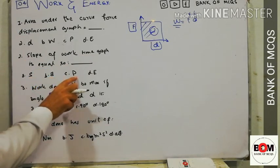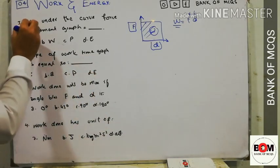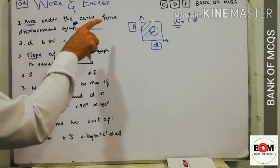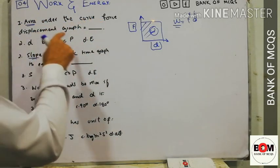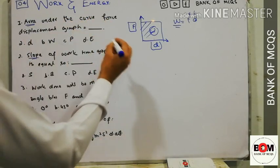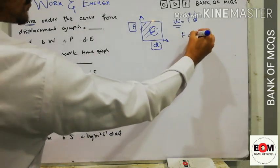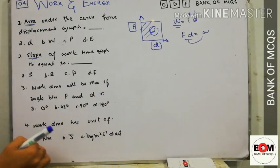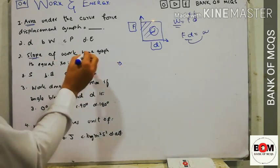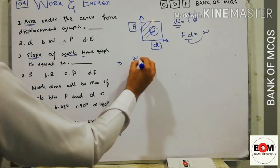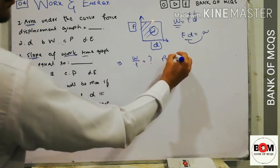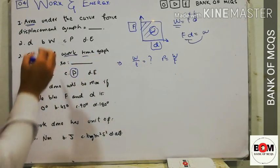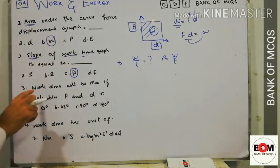The second MCQ: the slope of the work-time graph equals power. When we study the slope, we divide the first quantity by the second, so work divided by time. We know that P equals W divided by t, so the slope of the work-time graph is power — option C. In the first case the answer was work.